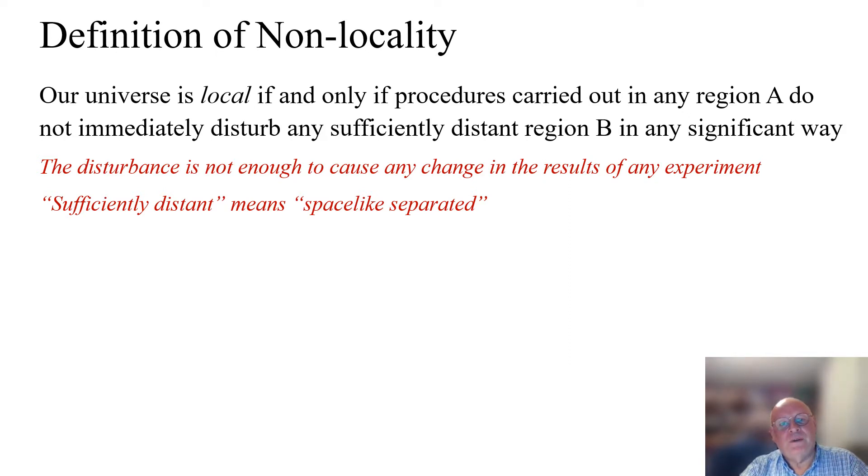For example, according to Newtonian mechanics, by jiggling my arm I can instantly cause the moon to jiggle in its orbit, but this is completely unmeasurable. Nowadays, in the time of relativity, sufficiently distant means essentially space-like separated - you can't get a ray of light to travel between the two places.